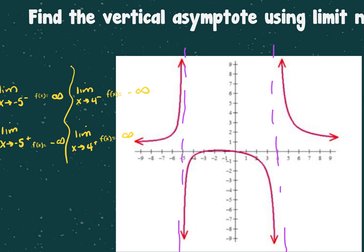For end behavior: as x goes to negative infinity, f(x) is going to zero, and as x goes to positive infinity, f(x) is going to zero. It's going based on your horizontal asymptote.